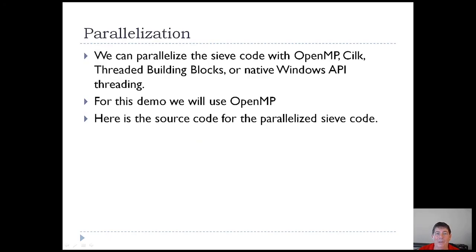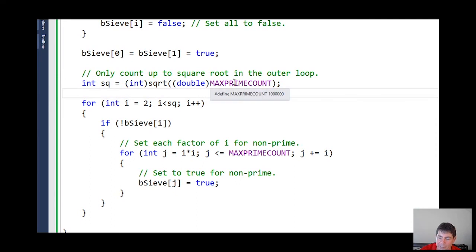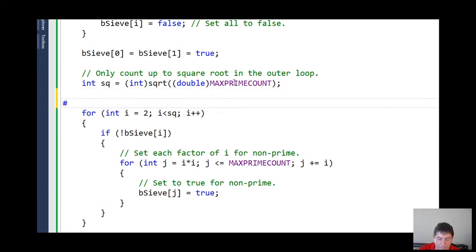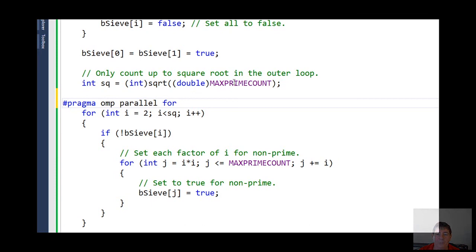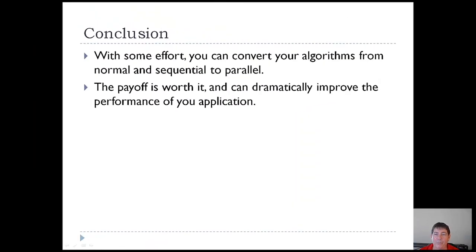You're probably wondering where the parallelization comes in. How is this a parallel algorithm? It looks like the old Sieve of Eratosthenes that I teach in computer science. To parallelize the pre-calculation, all we need is some OpenMP — and we're done. That's all it takes, and you get about a four-fold increase in the pre-calculate function. In conclusion, with some effort, you can convert almost any algorithm from normal and sequential to parallel. In almost every case, the payoff is worth it, and it can dramatically improve the performance of your application.